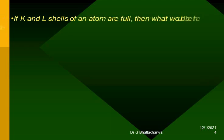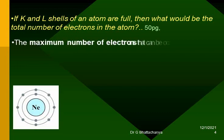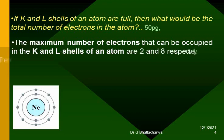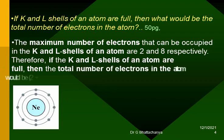If K and L-shells of an atom are full, then what would be the total number of electrons in the atom? The maximum number of electrons that can be occupied in the K and L-shells of an atom are 2 and 8 respectively. Therefore, if the K and L-shells of an atom are full, then the total number of electrons in the atom would be 2 plus 8 equals 10 electrons.